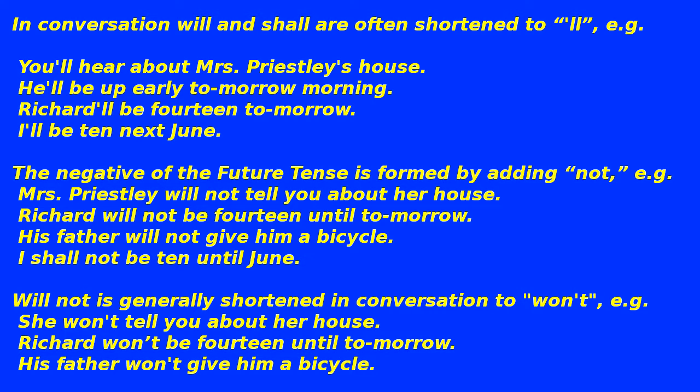The negative of the future tense is formed by adding 'not'. E.g.: 'Mrs. Priestley will not tell you about her house'; 'Richard will not be 14 until tomorrow'; 'His father will not give him a bicycle'; 'I shall not be 10 until June.' 'Will not' is generally shortened in conversation to 'won't'. E.g.: 'She won't tell you about her house'; 'Richard won't be 14 until tomorrow'; 'His father won't give him a bicycle.'